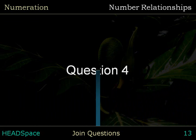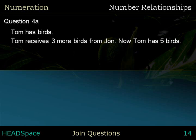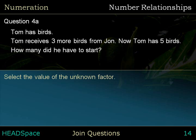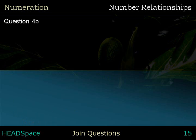Question 4. Question 4a. Tom has some birds. Tom receives three more birds from John. Now, Tom has five birds. How many did he have to start? Select the value of the unknown factor. The answer is two. Start — Factor A is unknown.